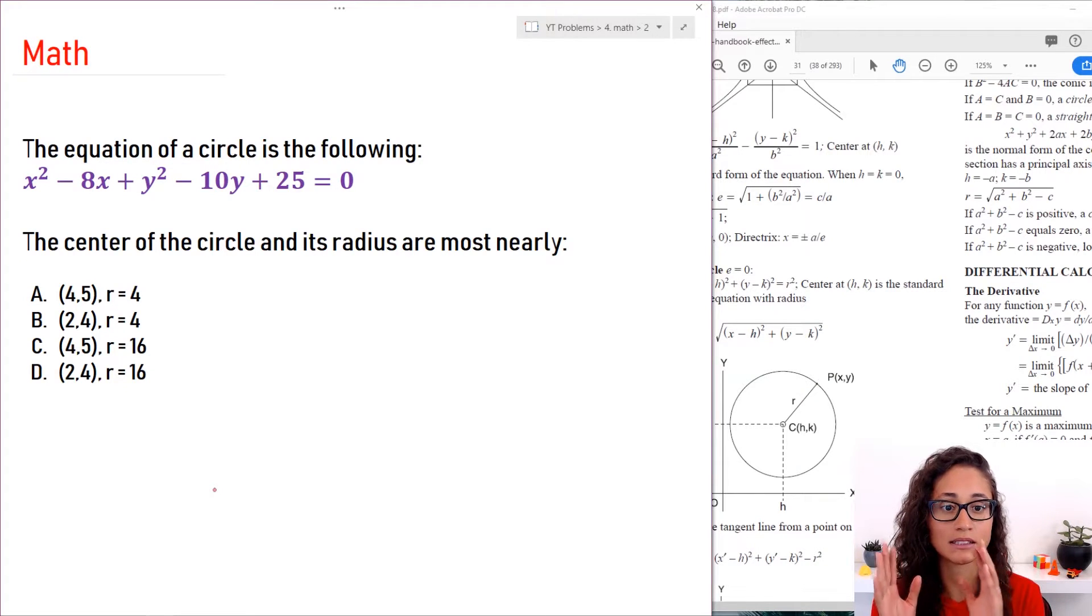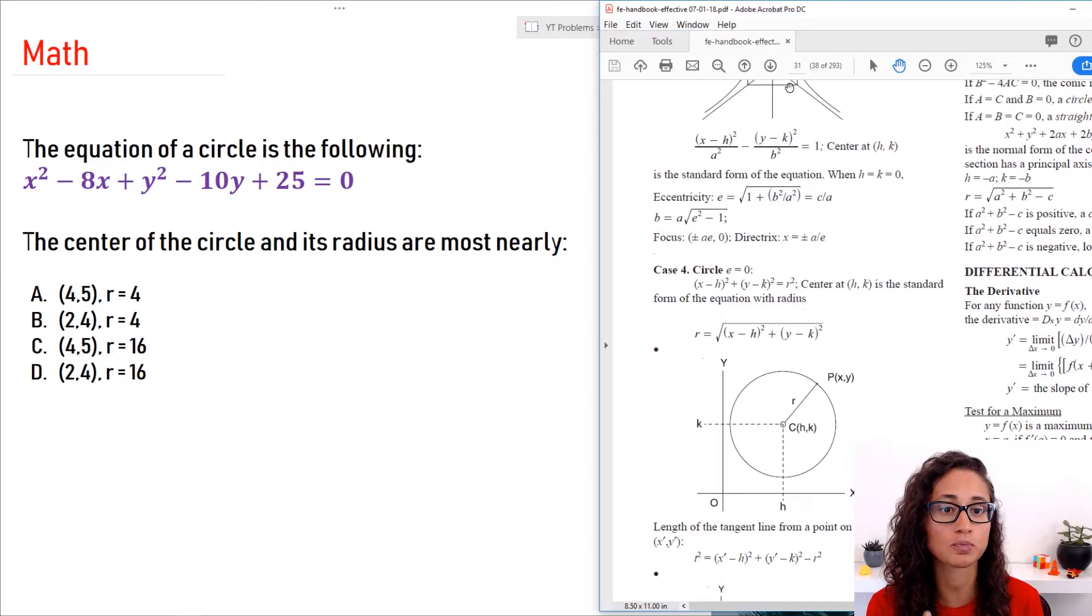First thing you gotta know is that the equation should look like something like this. So if you go to page 31 under the math section you will see here that they give you (x minus h) squared plus (y minus k) squared equals r squared. The center is h, k. So we need to put this equation that you guys see here into this form so that way h and k would be my center of the circle and then r would be my radius. So we need to transform this equation into this.